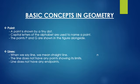First, Point. A point is shown by a tiny dot. Capital letters of the alphabet are used to name a point. The points P and G are shown in the figure alongside.